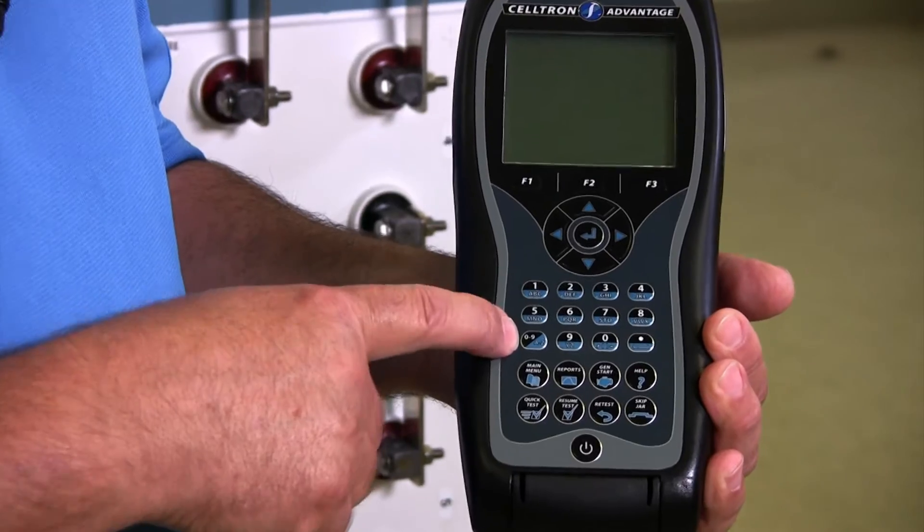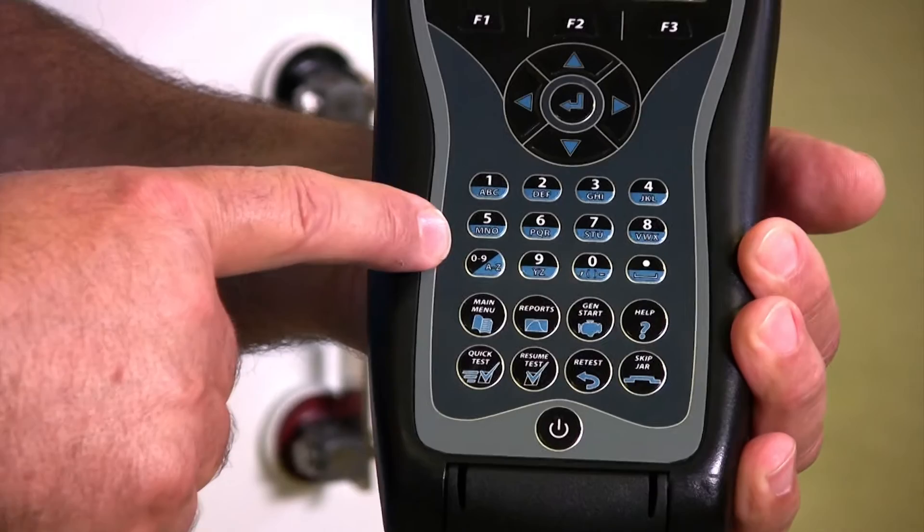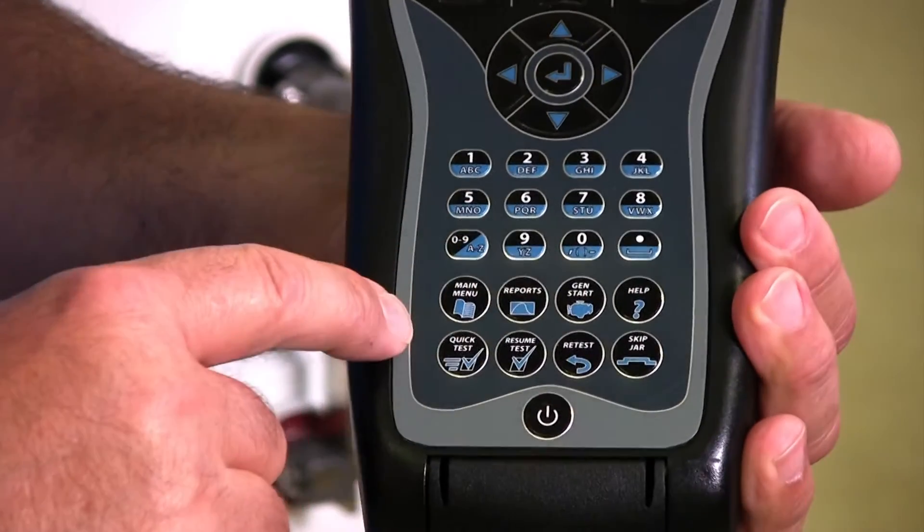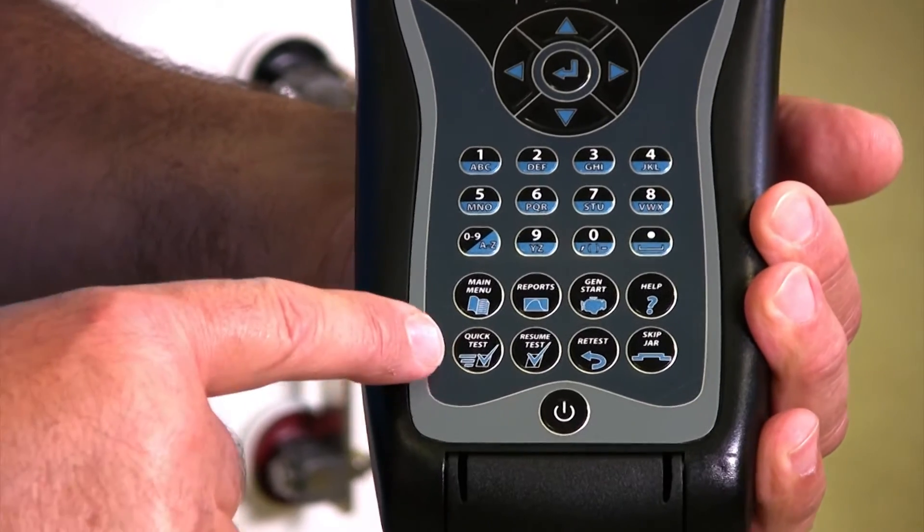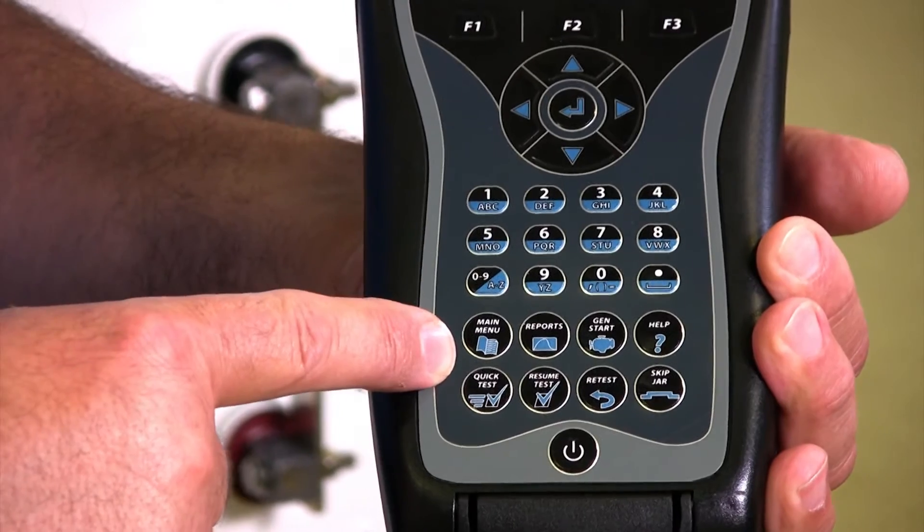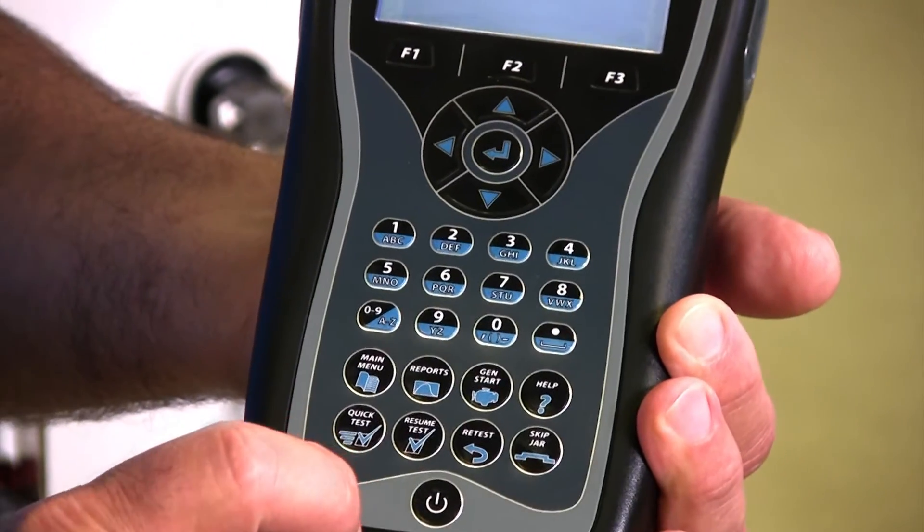You have a toggle button here that goes between alpha and numeric functions of the keys. You have some special character keys also on here, and then you have your quick hot keys to get to certain functions in the tester. And then of course down here we have our power button that's going to turn our tester on.